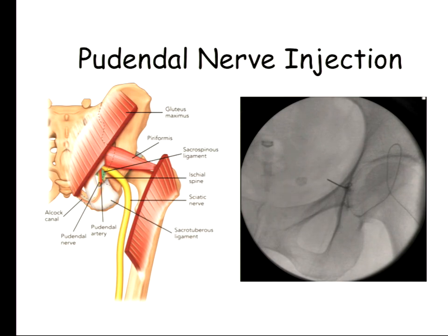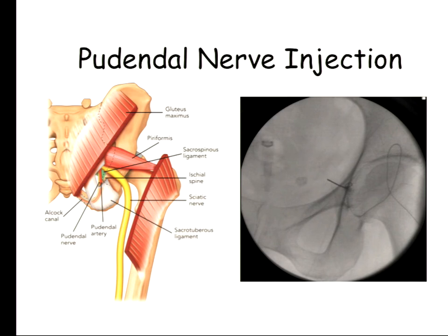The traditional technique uses the ischial spine as a landmark due to the close proximity between the pudendal nerve and the ischial spine. However, consider this: if the nerve is entrapped between the sacrospinous and sacrotuberous ligaments, the nerve is defined by the fascial plane between these two ligaments. The ischial spine landmark approach is not ideal because it only gives you a rough approximation around the tip of the ischial spine, and X-ray cannot identify the fascial plane.